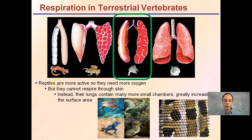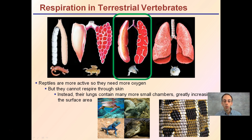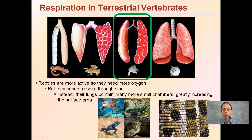Moving on to reptiles — they are more active and as a result need more oxygen. They cannot respire through their skin because they have water-tight skin, which allows them to live in more of a land-based environment. Instead, their lungs contain many more small chambers, which greatly increases the overall surface area over amphibians. They need that increased surface area because they're solely dependent on their lungs and cannot respire through their skin.